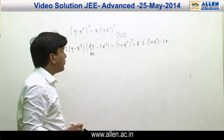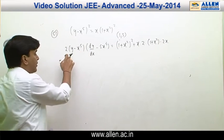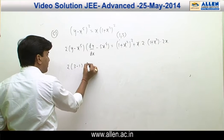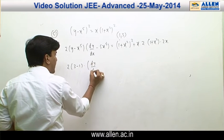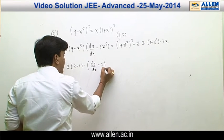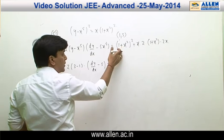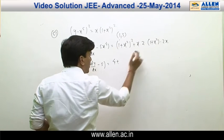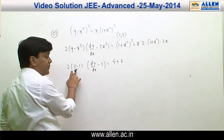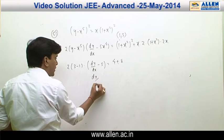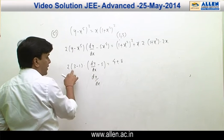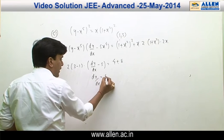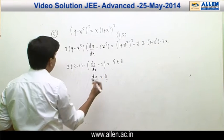Substituting x = 1 and y = 3, we get 2(3 minus 1)(dy/dx minus 5) equals (1+1)² plus 1 times 2(1+1)(2), which gives 4 + 8 = 12. So 4(dy/dx minus 5) = 12, meaning dy/dx = 3 + 5 = 8. The correct answer for this question is 8.